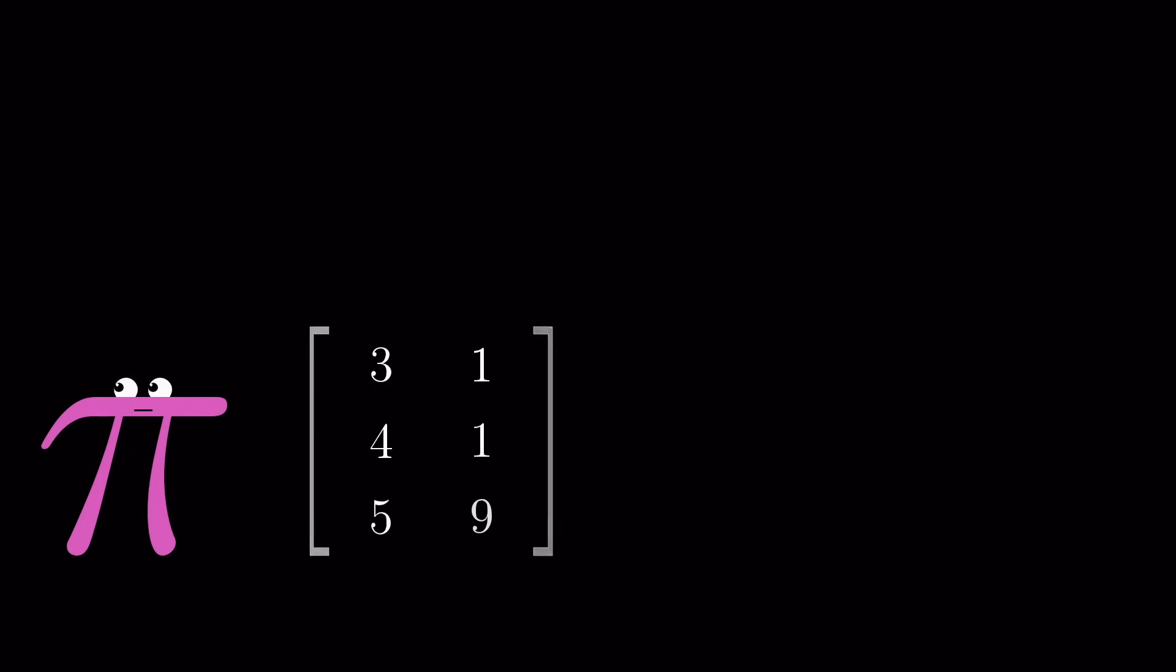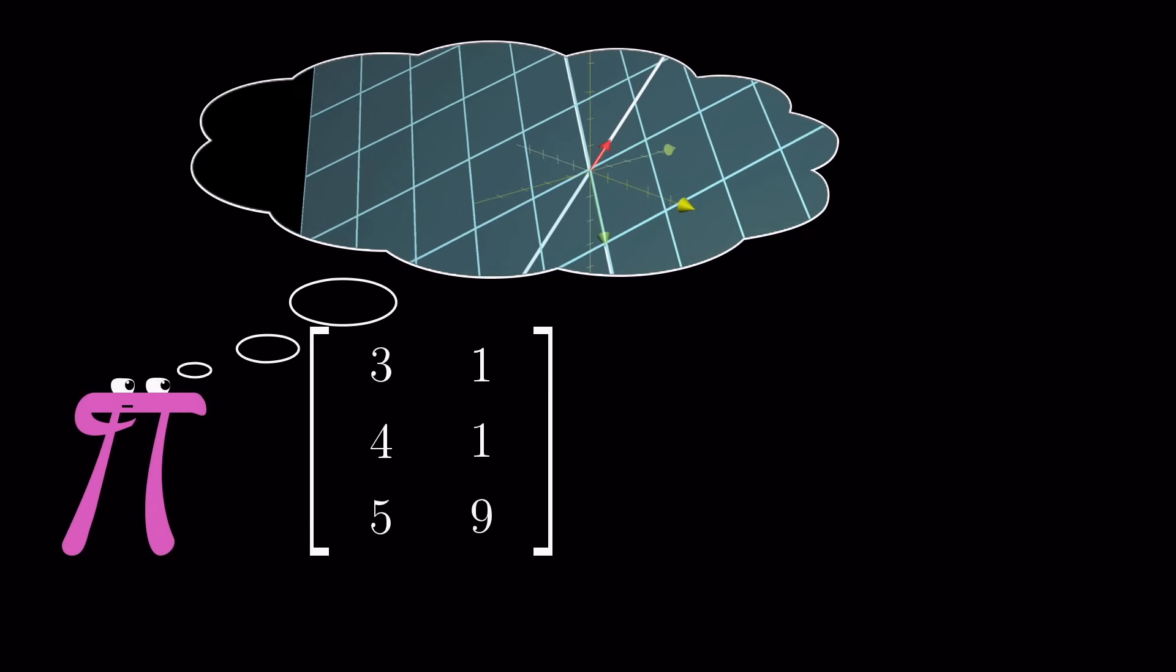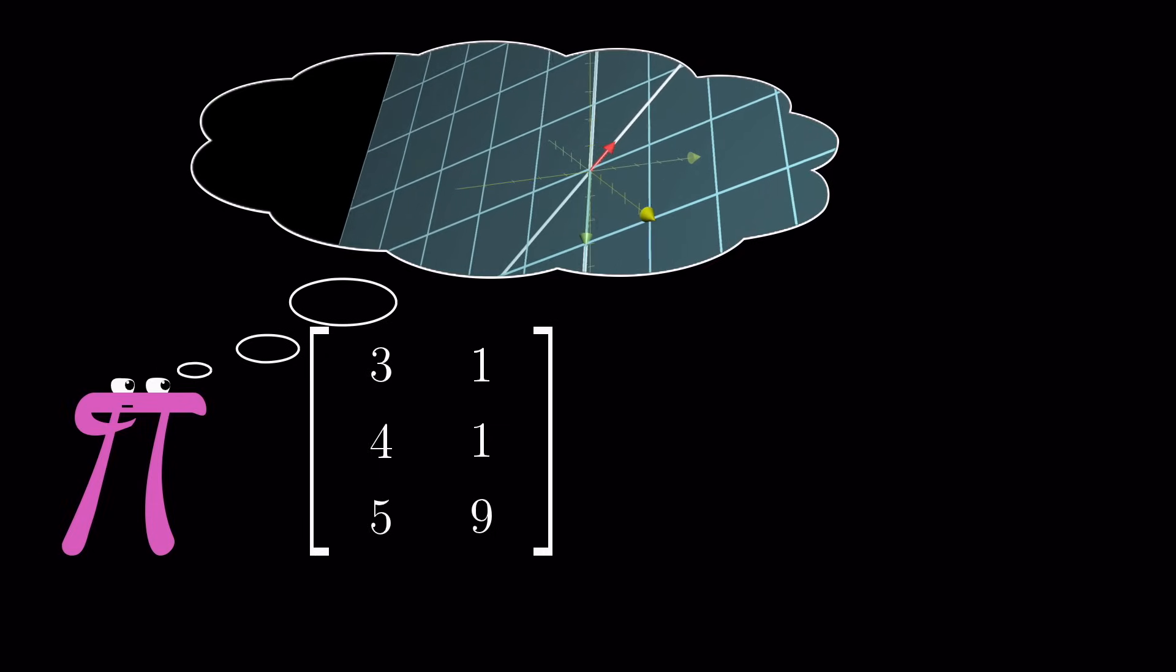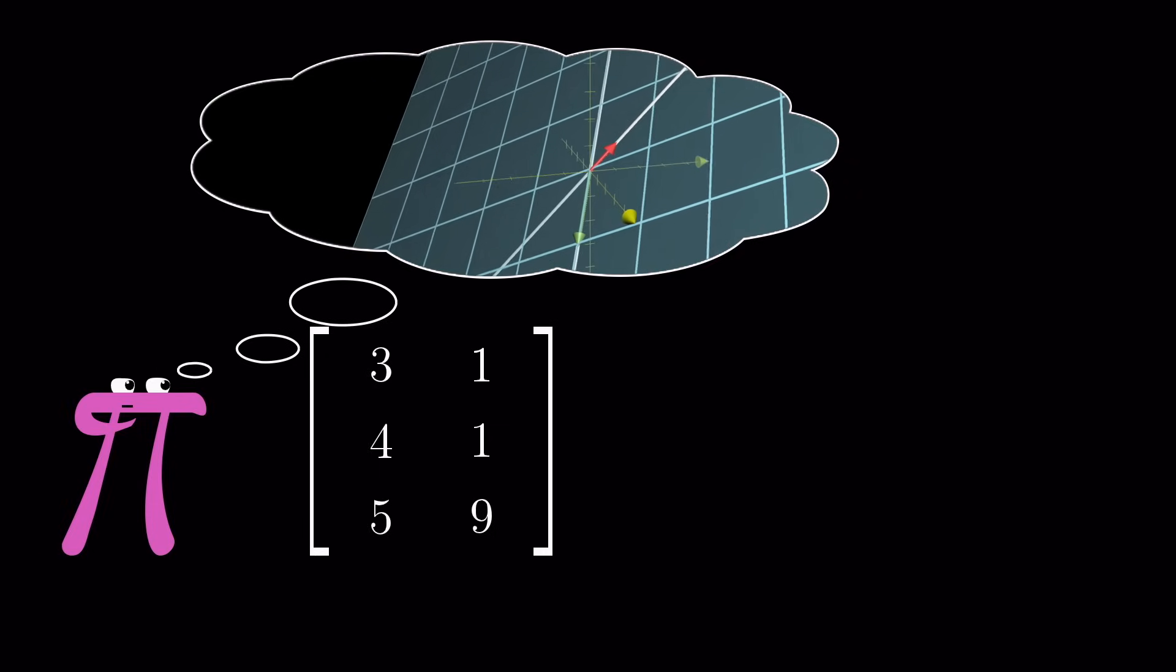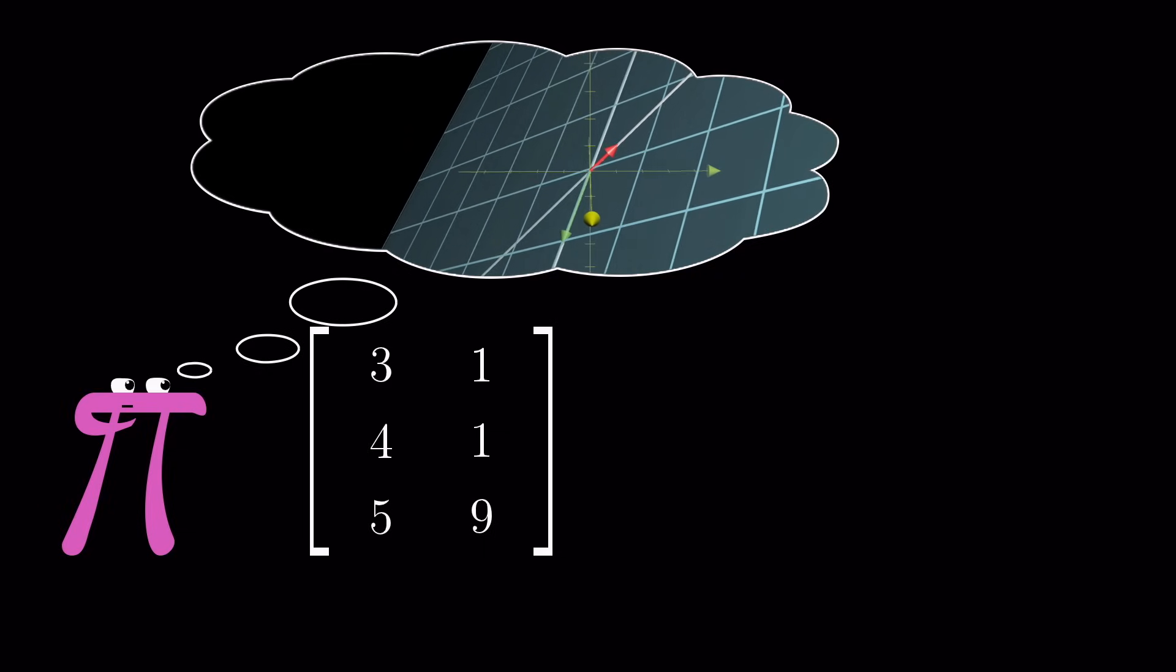So if you see a 3x2 matrix out in the wild, you can know that it has the geometric interpretation of mapping two dimensions to three dimensions, since the two columns indicate that the input space has two basis vectors, and the three rows indicate that the landing spots for each of those basis vectors is described with three separate coordinates.